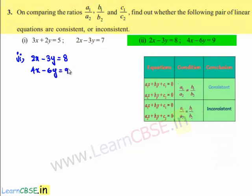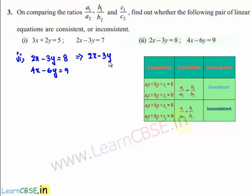Moving on to the second part, which is 2x minus 3y is equal to 8 and 4x minus 6y is equal to 9. The first equation can be written as 2x minus 3y minus 8 is equal to 0, and the second equation can be written as 4x minus 6y minus 9 is equal to 0.